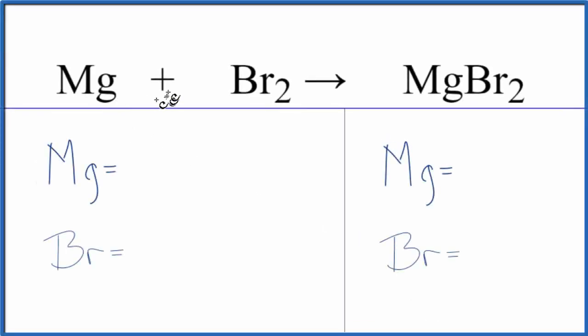To balance this equation, Mg plus Br2 yields MgBr2. Let's count the atoms up on each side of the equation. There's nothing written after the Mg, but we assume that to be one. So we have one Mg atom, two bromine atoms.